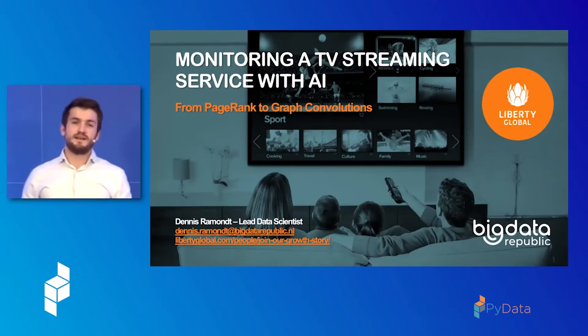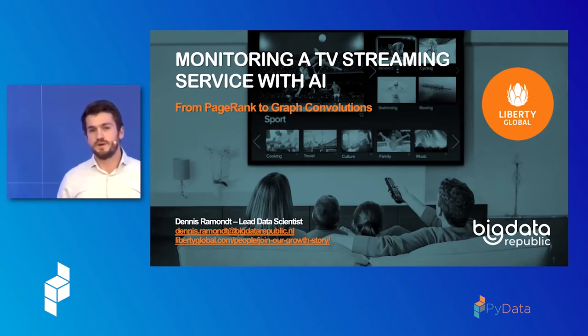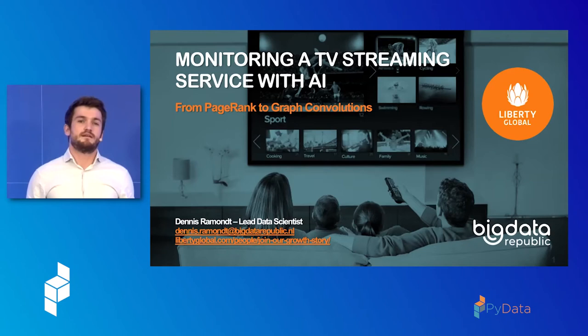And now everybody loves you. Well, I hope, but one can only wish. Well, the floor is all yours. So, my name is Dennis Ramond and I'm a lead data scientist at Big Data Republic. And today I will talk you through how, together with our clients, Liberty Global, we are monitoring a large-scale TV streaming service using artificial intelligence. And specifically, I'm going to talk about how we use graph analytics to achieve this.